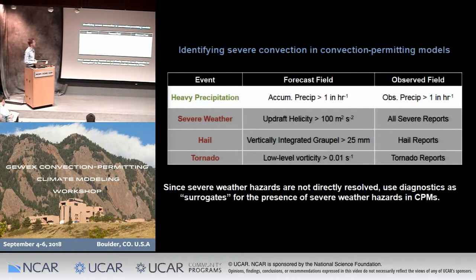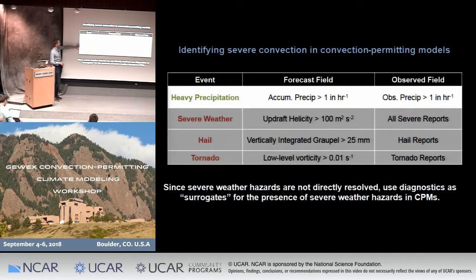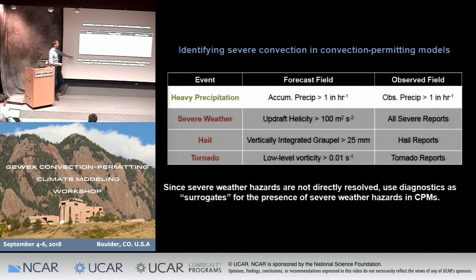When we look at diagnostic fields from convection-permitting models, we generally have a handful related to convection — reflectivity or precipitation, for example. If you want to make a forecast of heavy precipitation, it's pretty straightforward: you take the model output field of accumulated precipitation above some threshold, use that as your forecast, and verify it against observed precipitation. For severe convection, we don't have fields specifically related to individual hazards, so we're not resolving tornadoes, not resolving hailstones explicitly, though we're starting to resolve convective wind gusts at grid spacings of three to four kilometers. So we have other diagnostic fields developed to extract information on the potential for severe weather, one being updraft helicity.